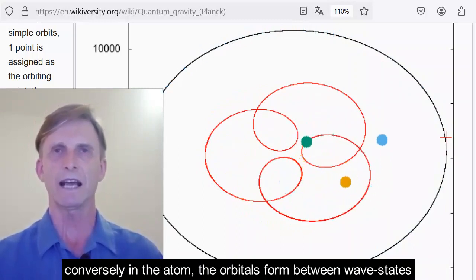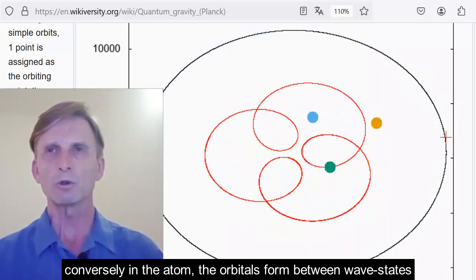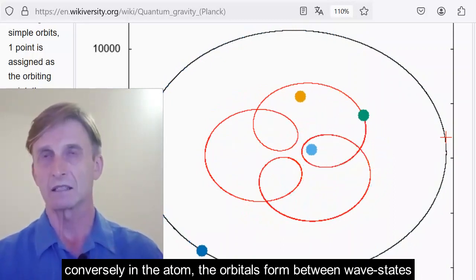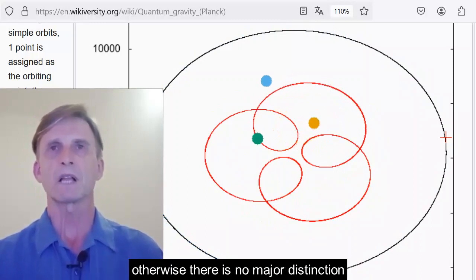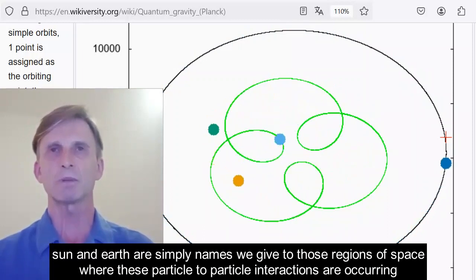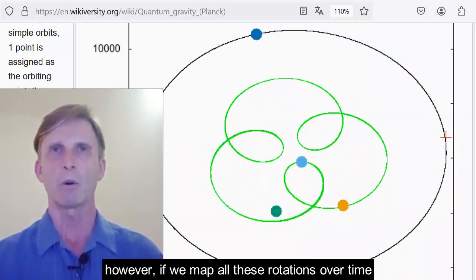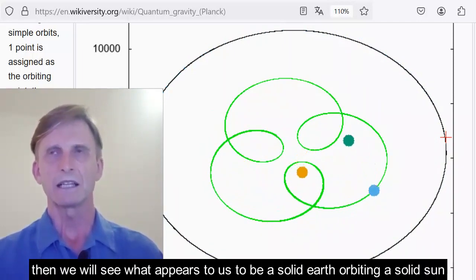We now have a network of orbitals that form between particle point states. Conversely, in the atom, the orbitals form wave states. Orbitals form between wave states, sorry. Otherwise, there is no major distinction. Sun and Earth are simply names we give to those regions of space where these particle-to-particle interactions are occurring. However, if we map all these rotations over time, then we will see what appears to us to be a solid Earth orbiting a solid Sun.